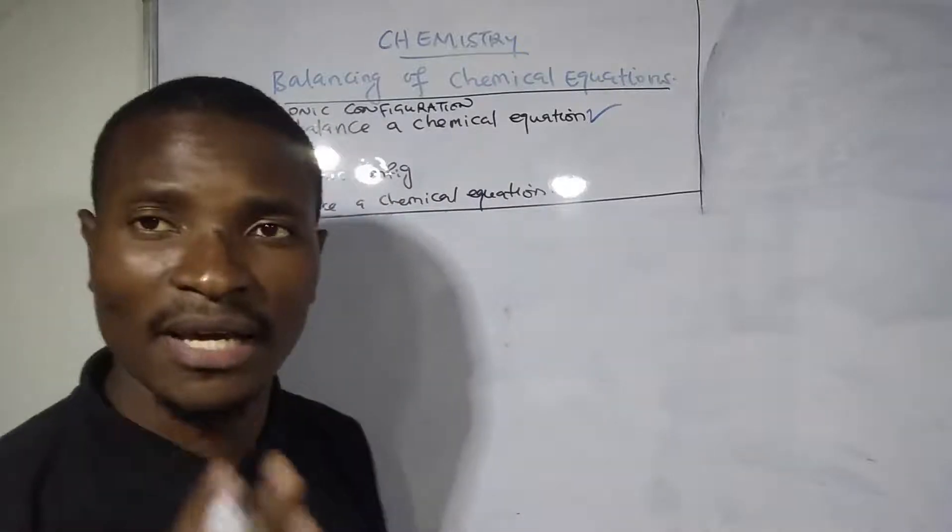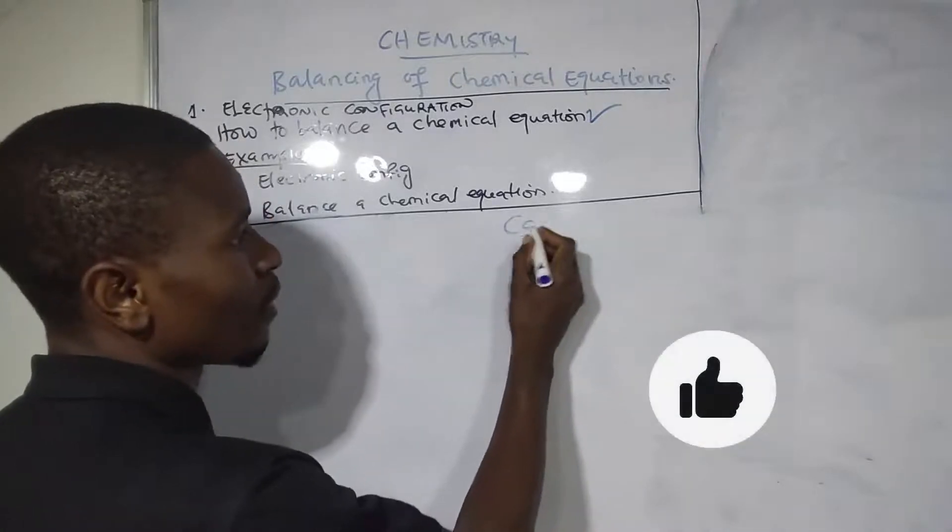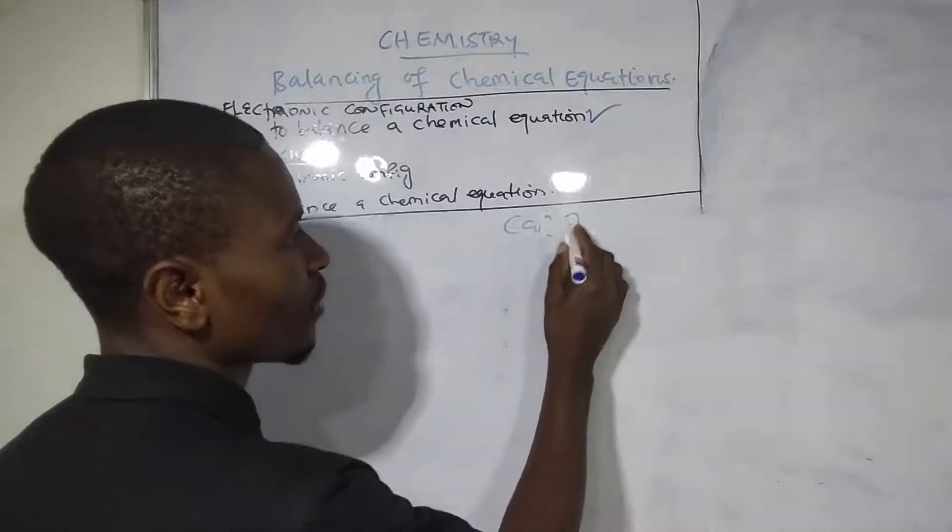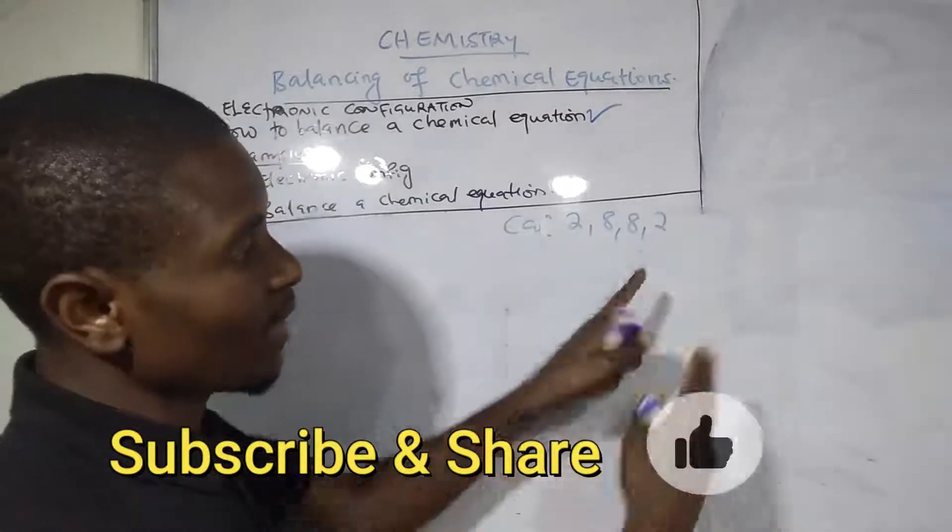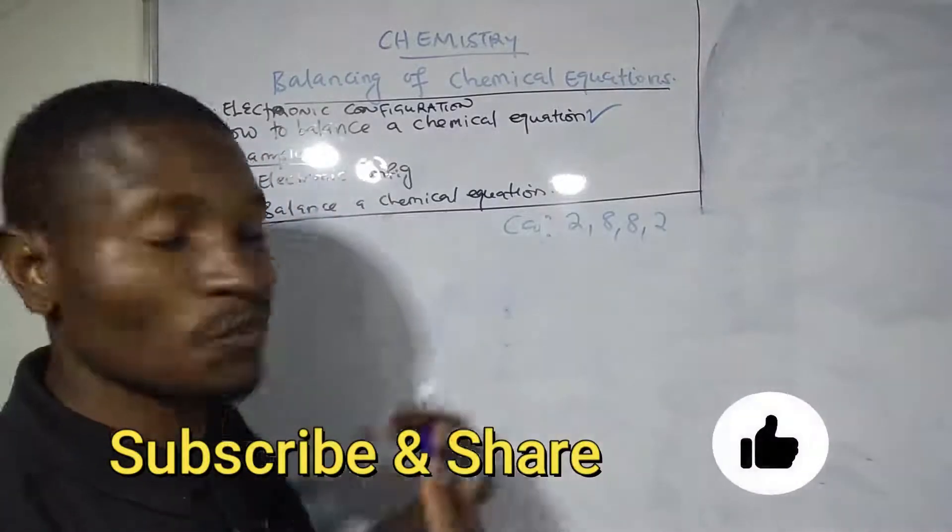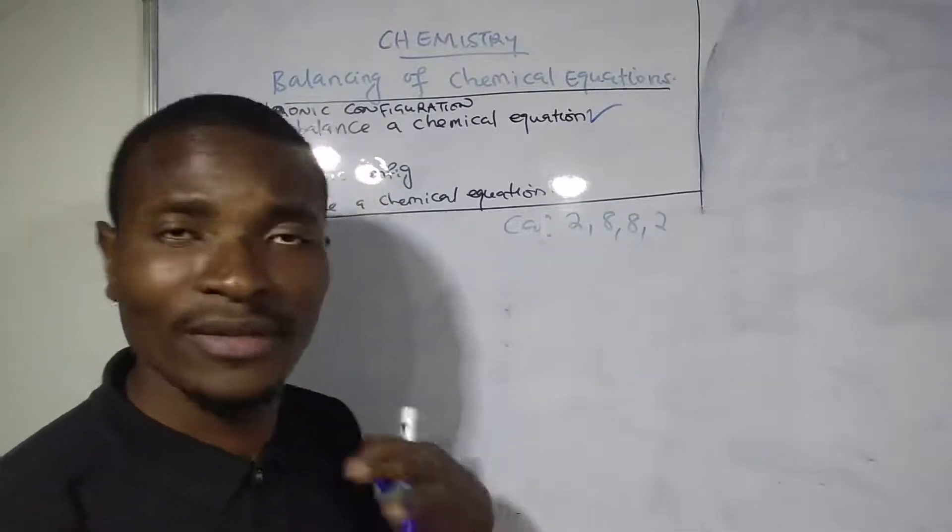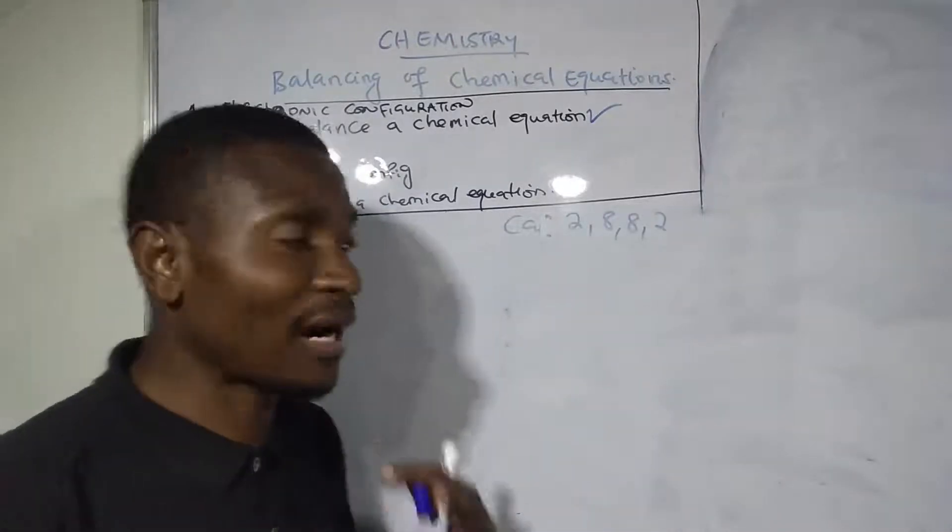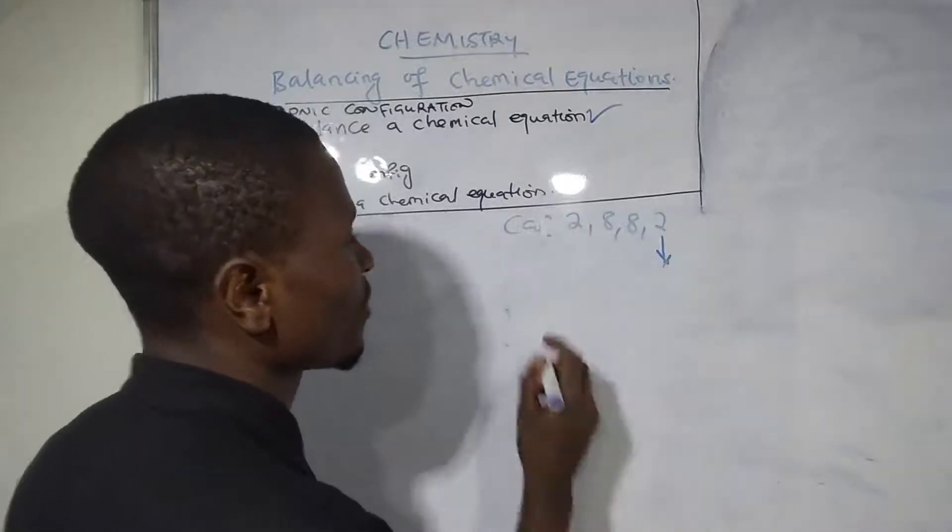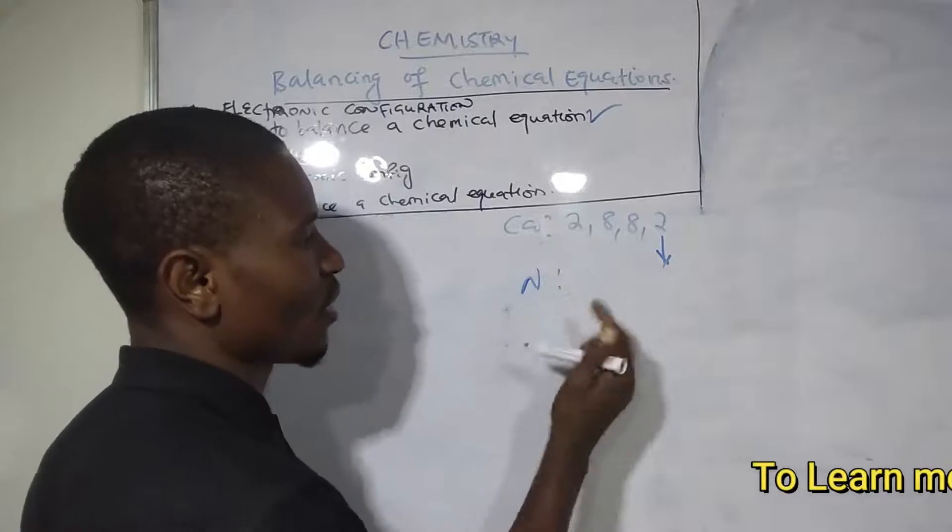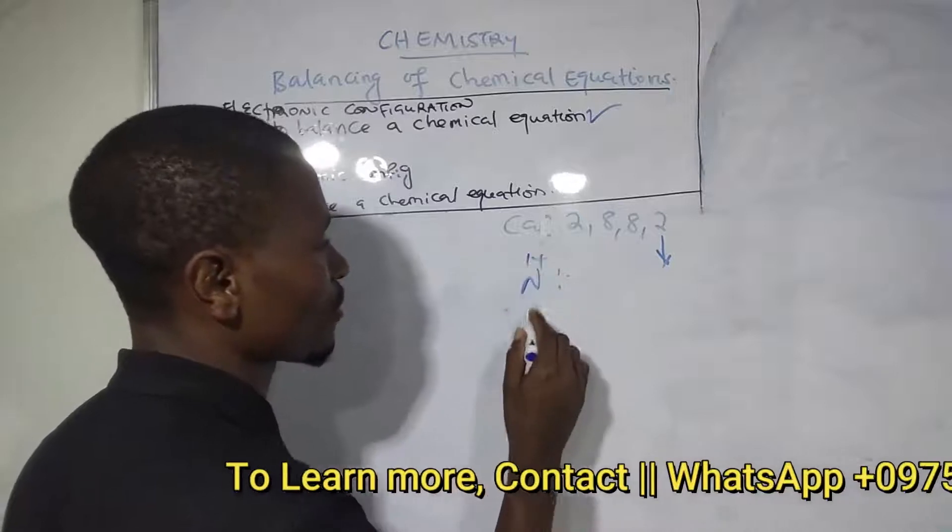I want to emphasize that when we configured calcium, we had 2, 8, 2. You'll discover that the last number in the configuration represents the valence as well as the group number. However, there are exceptions for some elements. For instance, nitrogen, which is in group 7.